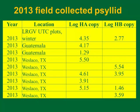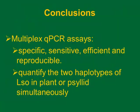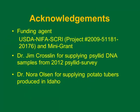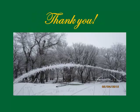With that, I conclude my talk. The multiplex qPCR assays are specific, sensitive, and efficient. They can quantify the two haplotypes — in plant or psyllid — simultaneously. When you do just one reaction, you're done. We need to thank our funding agents and our sample suppliers. Without the samples, we cannot do anything. Thank you for your attention.